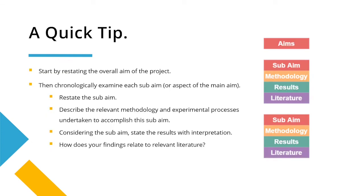Before we get into further resources, here's a quick tip to help with your discussion. In this slide I've got a graphical representation of what a structure for the discussion may look like. On the right-hand side, you start by restating the overall broad aim of the project. Then, chronologically examine each sub-aim — restating the sub-aim at the start of your paragraph, discussing what you've done in the methodology, what your results achieved from that methodology, and then whether this aligns or conflicts with existing literature. This is just one way to structure a discussion; it may be more appropriate for independent research, so if you're doing something different, try experimenting.